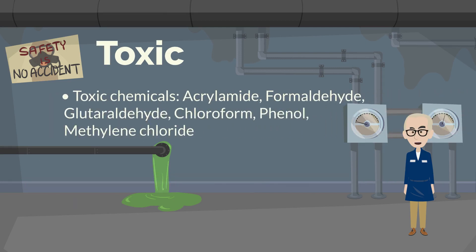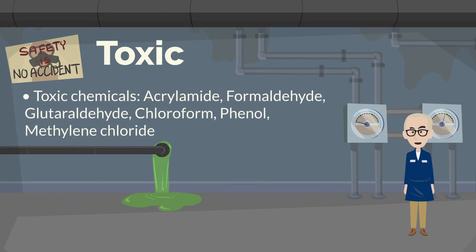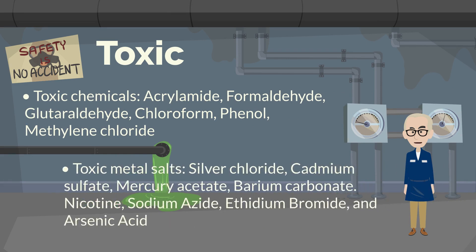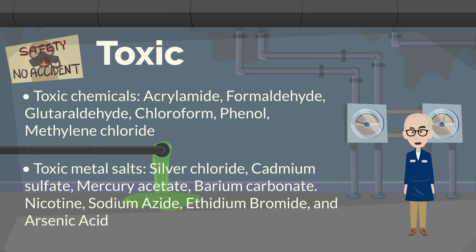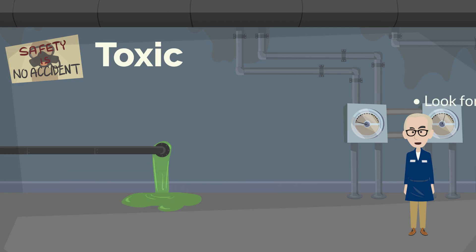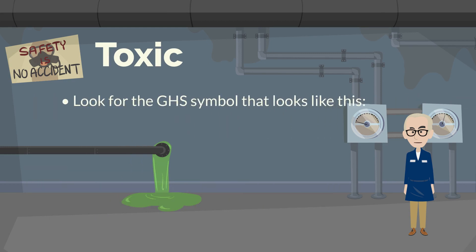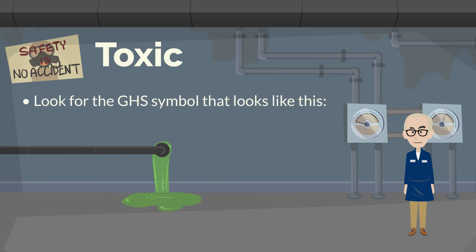Some common examples of toxic chemicals are acrylamide, formaldehyde, glutaraldehyde, and others. Toxic metal salts include silver chloride, cadmium sulfate, mercury acetate, and others. Look for the GHS symbol that looks like this.